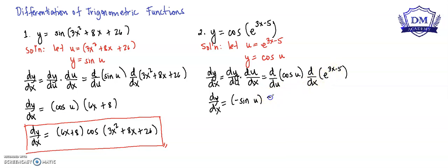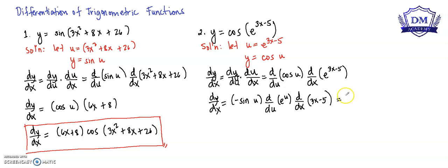Using the chain rule, we have the d/du of e raised to u, multiplied again by the d/dx of 3x minus 5. The derivative of e raised to u is still e raised to u, multiplied by the derivative of 3x minus 5, which is 3.